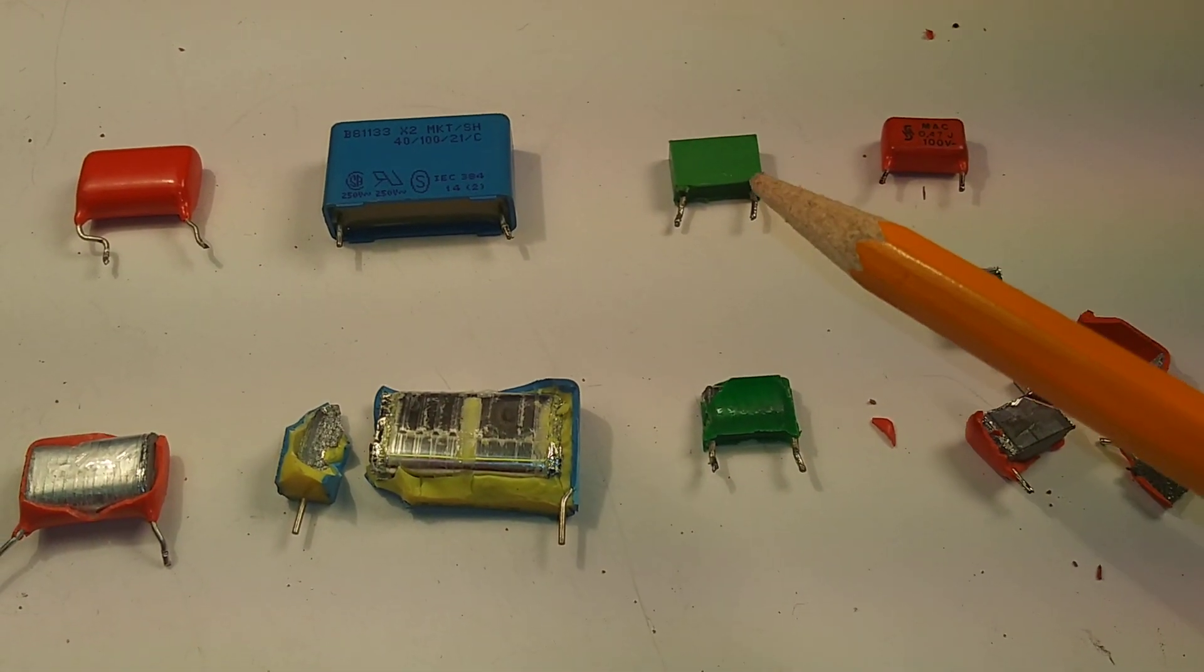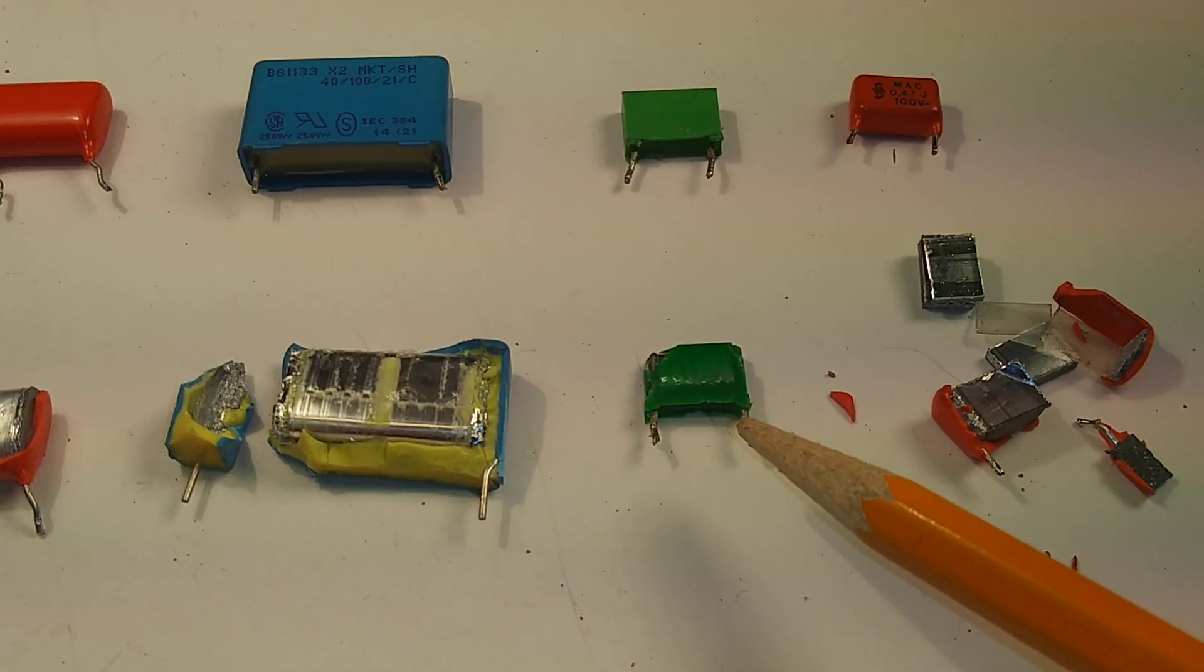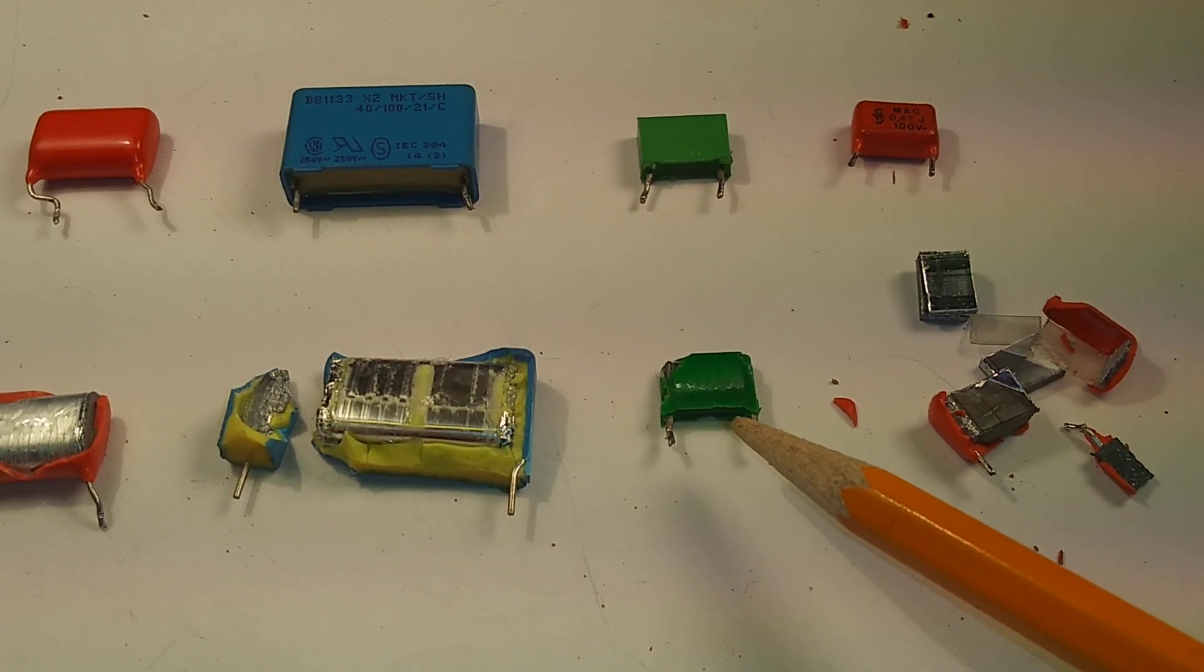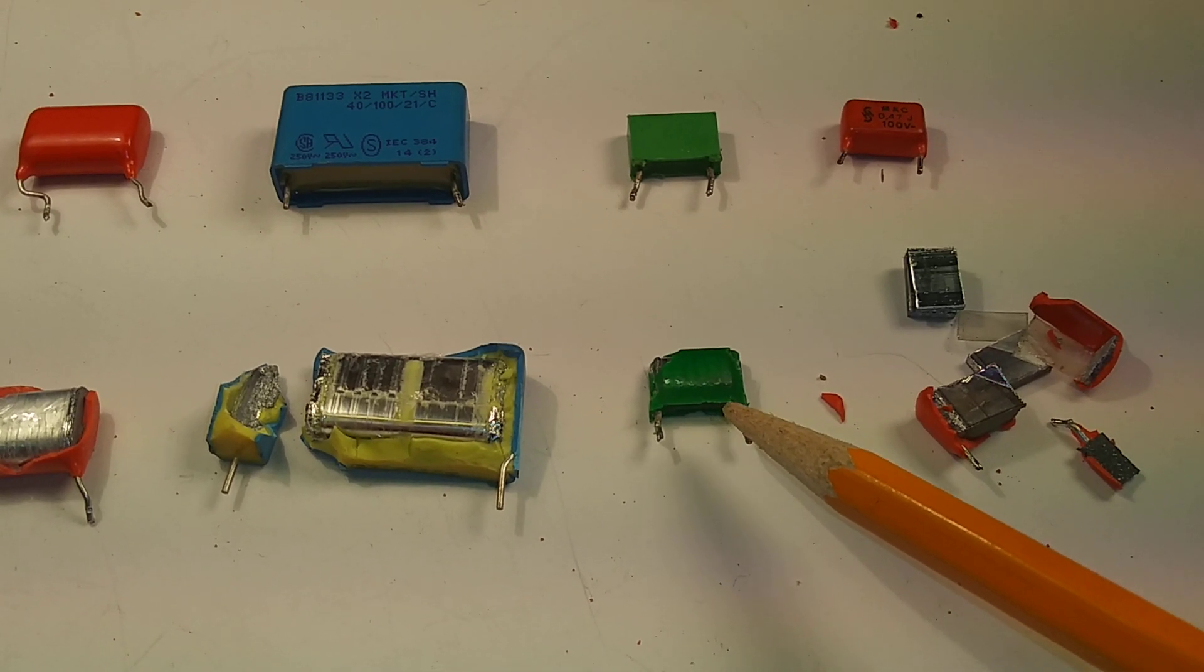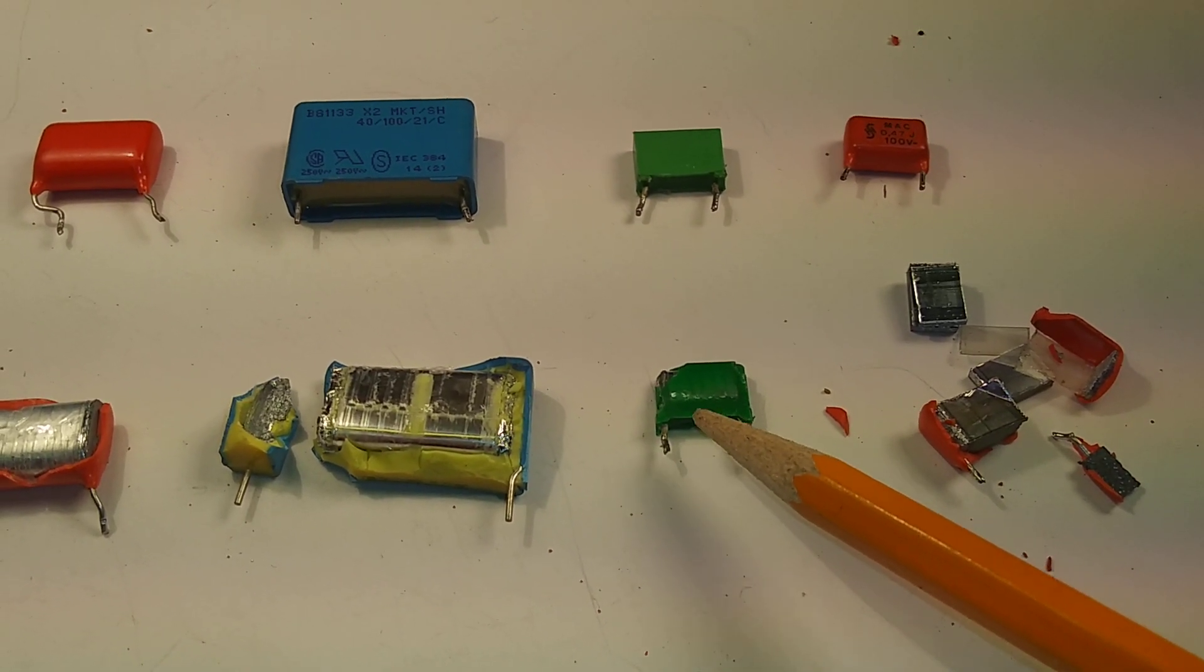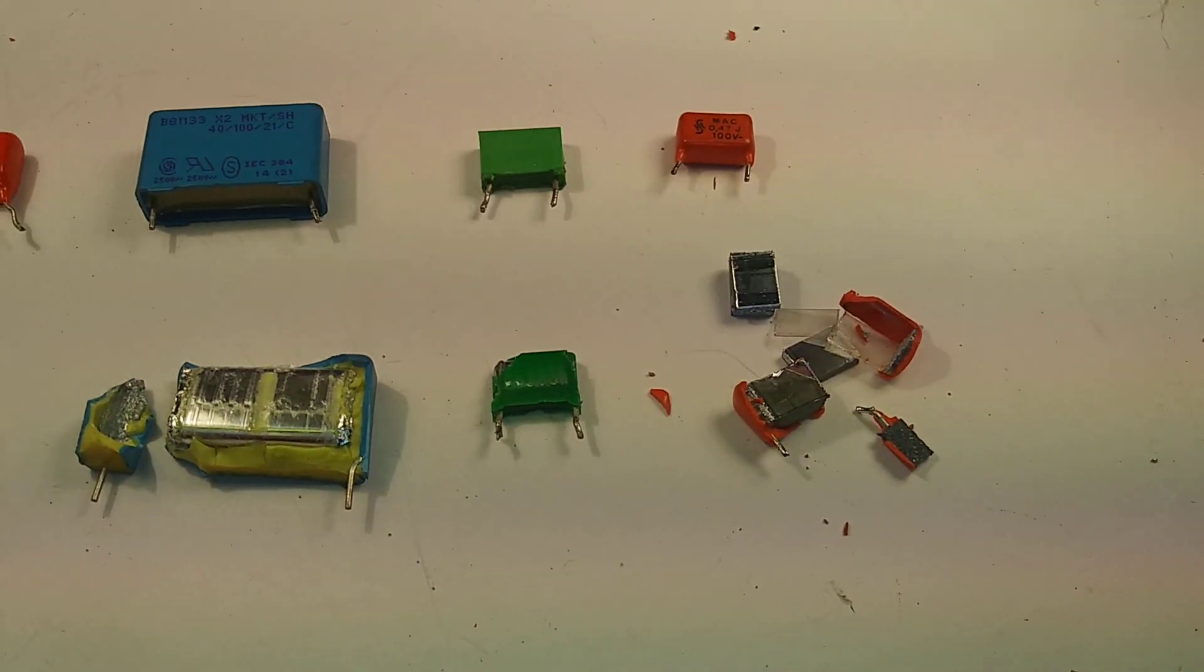And the next one again is just a box type of a mylar capacitor. Now I know it's not showing up, I wish I could zoom in on this camera but it's really old and it's crappy and I don't have the light. But once again it's just mylar rolled, just flattened.